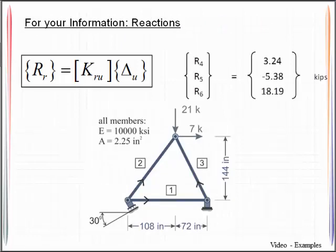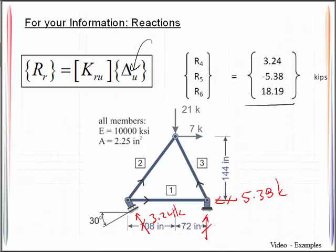And then we use that to get our reactions, where we plug in that displacement vector here, we compute these reactions, and if I actually sketch these on, here's what I get. Here's degree of freedom 4, and that is a positive 3.24 kips. Here is degree of freedom 5, and here's degree of freedom 6.